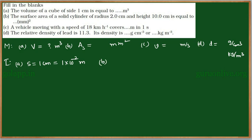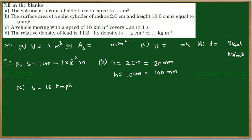For case B, the radius is given as R = 2 centimeters. Since we need the surface area in millimeter square, that converts to 20 millimeters, and height H = 10 centimeters equals 100 millimeters. For case C, speed V = 18 km/h and we need it in meter per second. For case D, relative density Rd = 11.3, and we need the density of lead in gram per centimeter cube or kg per meter cube.